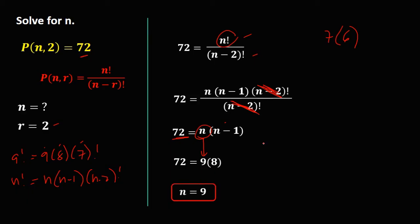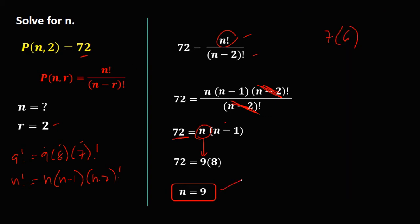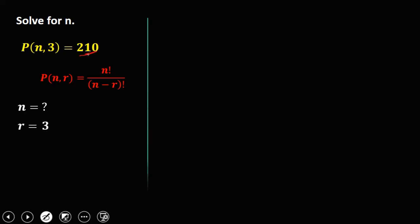To check the answer: with n equal to 9 and r equal to 2, P(9,2) gives 72. So n is confirmed to be 9. Now for the next problem, with r equal to 3, we have n factorial over n minus 3 factorial.